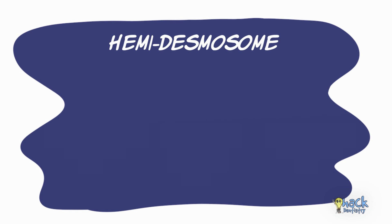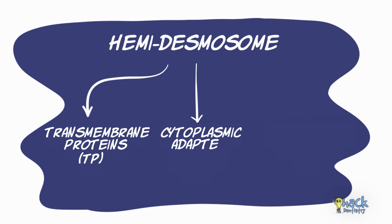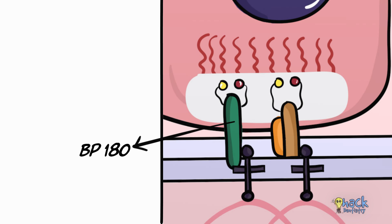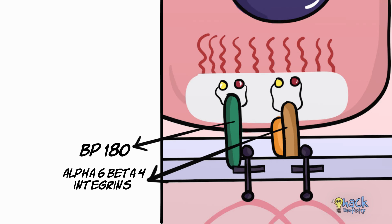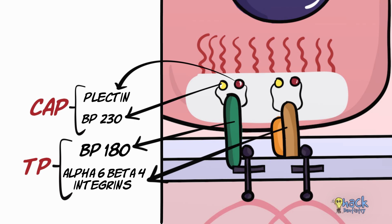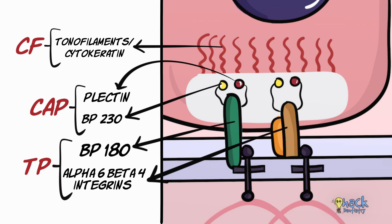Hemidesmosomes are composed primarily of three proteins: the transmembrane proteins, the cytoplasmic adapter proteins, and the cytoskeletal filaments. Bullous pemphigoid antigen 180 (BP180) and alpha-6-beta-4 integrins form the transmembrane proteins. BP230 and plectin form the cytoplasmic adapter proteins, and tonofilaments or cytokeratins form the cytoskeletal proteins.